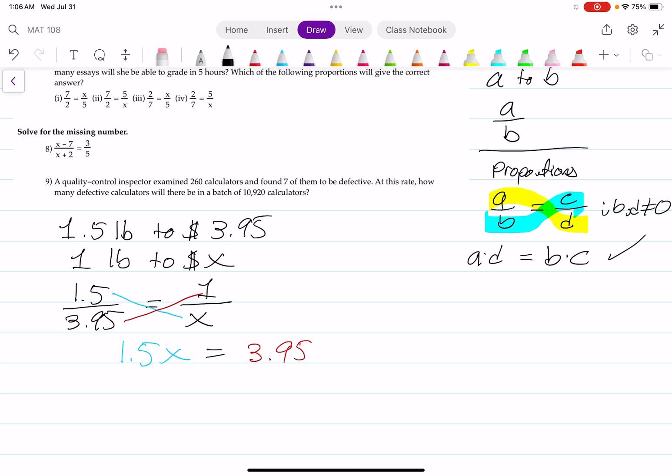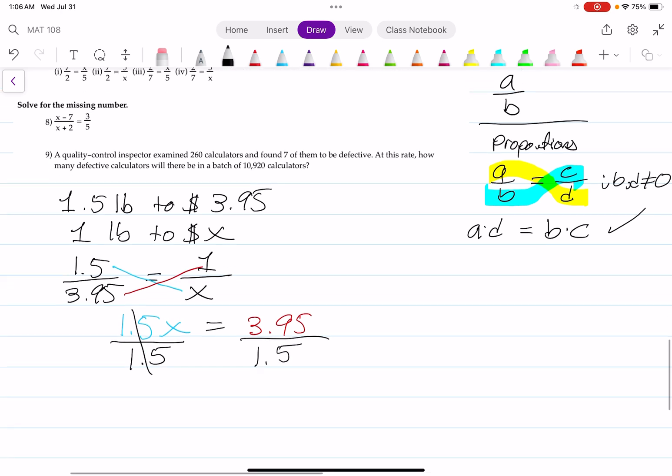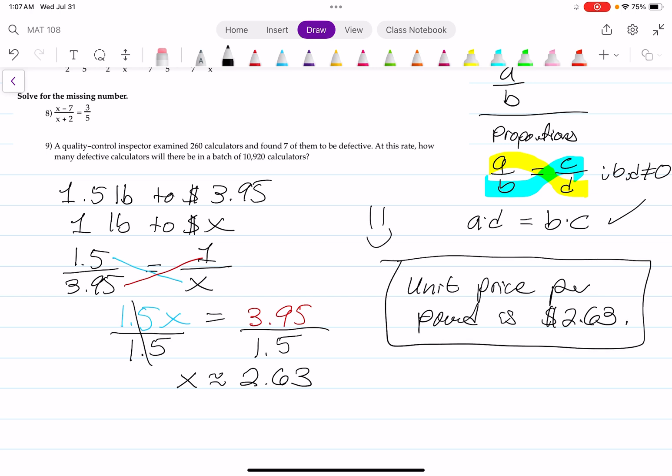To solve for X, we can do the inverse operation. Divide both sides by 1.5. X is approximately 2.63. This is in terms of money, so we can say the unit price per pound is $2.63. And we answered the question.